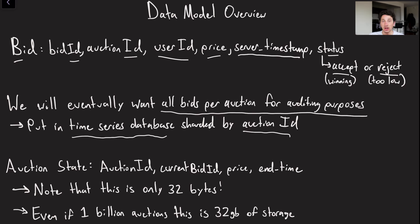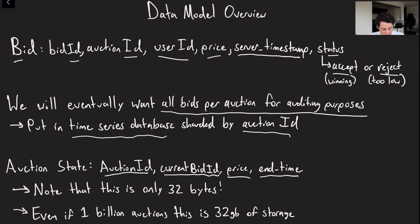Another data model is the auction state. It's pretty simple: an auction ID, the current winning bid ID, the current price, and the end time — which will change for variable-time auctions based on the winning bid. Notably, this is only 32 bytes. If we wanted to do bidding logic in memory, it's not expensive at all. Even with a billion auctions that's only 32 gigabytes, so perhaps we could get away with just a couple of in-memory servers to do our auction logic.